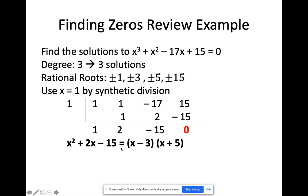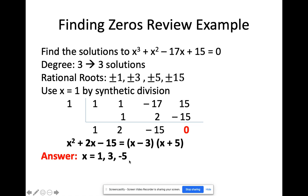Now I need factors of negative 15 whose sum is 2. That gives me (x − 3) and (x + 5). So the other two answers are x = 3 and x = negative 5. The three solutions are x = 1, x = 3, and x = negative 5.